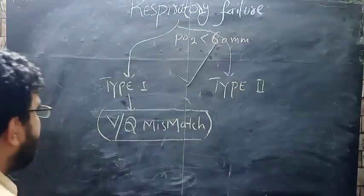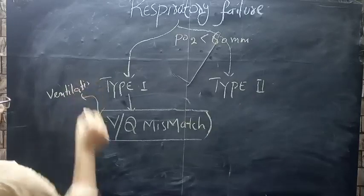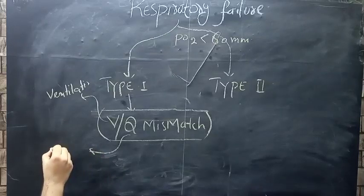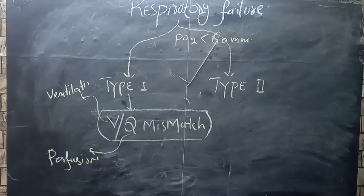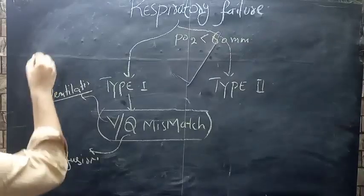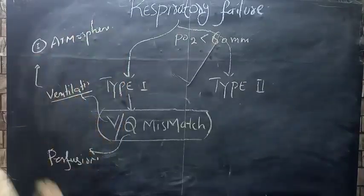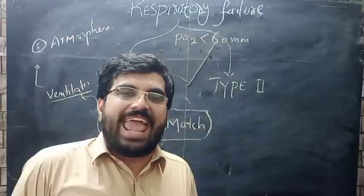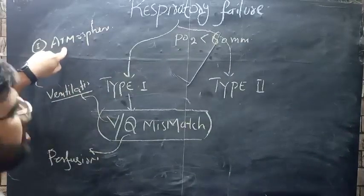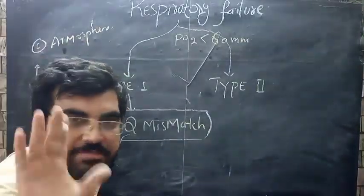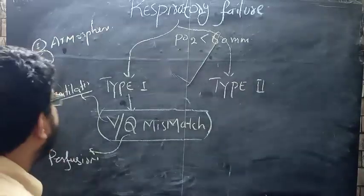In VQ mismatch, there is either a problem in V (ventilation) or Q (perfusion). For ventilation defects, one important cause is if oxygen is low in the atmosphere — for example, if a person goes to a high altitude like Mount Everest or K2 where oxygen concentration is low, that would cause Type 1 respiratory failure.